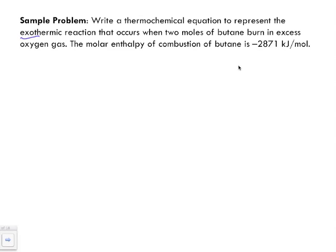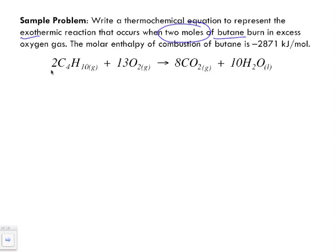What we want to do is start off with our balanced chemical equation. Now, the key though is we're being told that we've got two moles of butane. So we want to make sure that when we balance this equation that this remains as is to show us the two moles of butane.